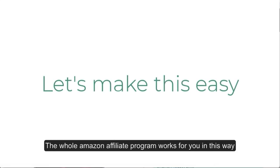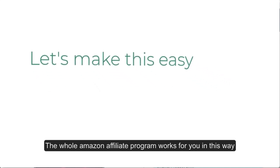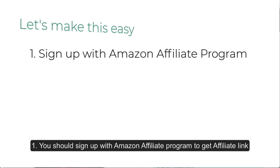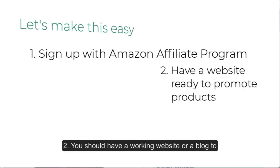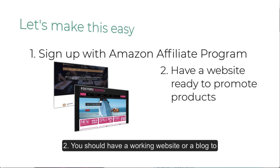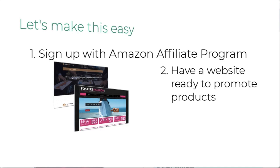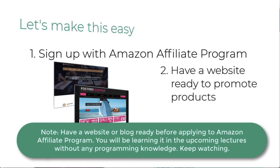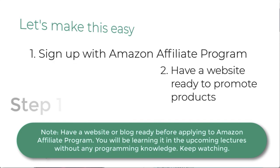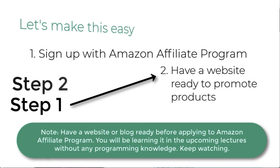Let me make the entire process easy for you. The whole Amazon affiliate program works in this way. Number one, you should sign up with Amazon affiliate program to get affiliate links of products. Number two, you should have a working website or blog to promote products. When signing up, they ask for your website URL, so our initial step should be to make a website for Amazon products promotion first, and then sign up with the Amazon affiliate program.